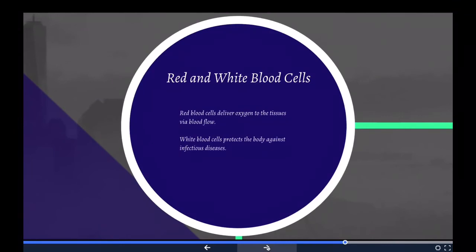We need to be basically familiar with red and white blood cells. Red blood cells are the most common type of blood cell and the vertebrates' principal means of delivering oxygen to the body tissues by blood flow through the circulatory system. Red blood cells take up oxygen in the lungs and release it into tissues while squeezing through the body's capillaries. The important part is that red blood cells deliver oxygen to the tissues by blood flow.